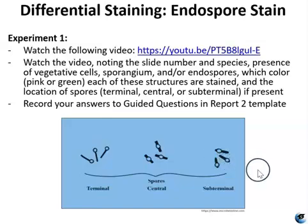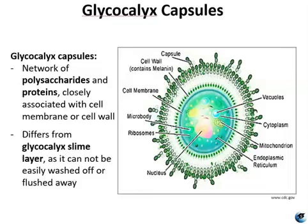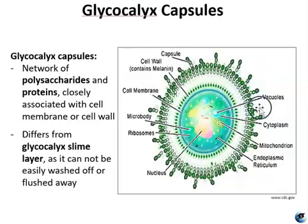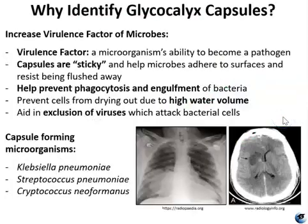Capsules are the next structure we're looking at. Glycocalyx capsules are a network of polysaccharides and proteins closely associated with the cell membrane or cell wall. They differ from glycocalyx slime in that slime can be easily washed away, whereas capsules cannot. Capsules are quite sticky, and capsule production increases the virulence of some microbes, such as Bacillus anthracis, Cryptococcus neoformans, and several pneumonias.